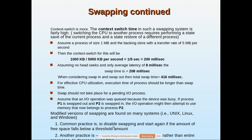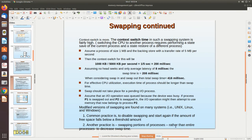A common practice found in systems like Unix and Linux is to disable swapping and re-enable it only when the amount of free memory falls below a threshold. Another practice is swapping only portions of a process rather than the entire process, in order to decrease swap time.